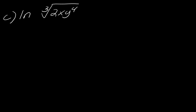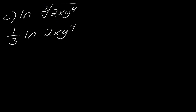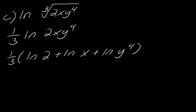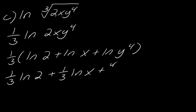So for this last expansion example, I've got the natural log and notice I've got this cube root here, which I really know is a rational exponent. So first things first, I'm just going to bring that one-third out in front. Now I can break all of this up by using the product rule: one third times the natural log of two plus the natural log of X plus the natural log of Y to the fourth. Then I can distribute this in and bring the power out in front: one third natural log of two, one third natural log of X plus four thirds natural log of Y. And so that's as far as that one will expand.